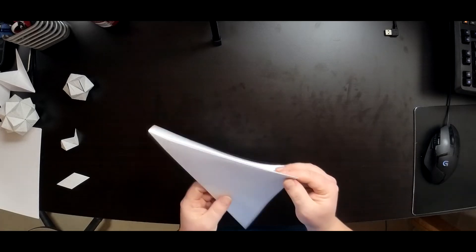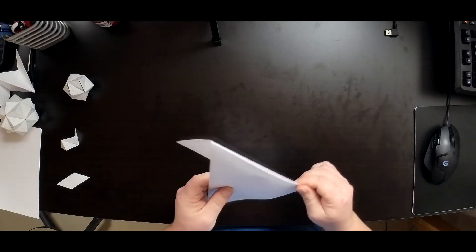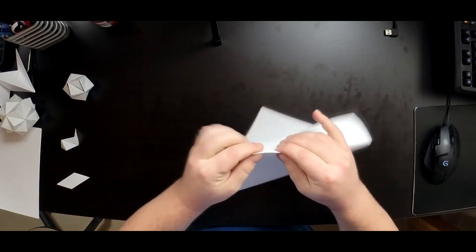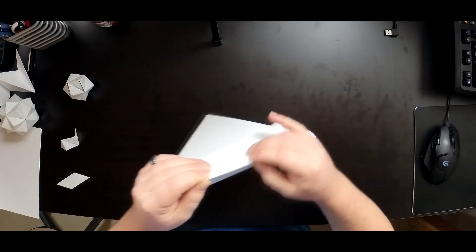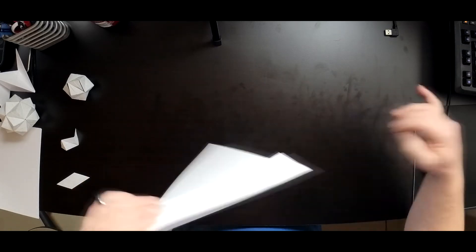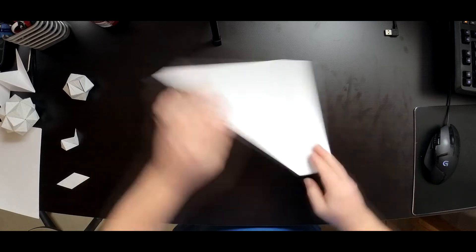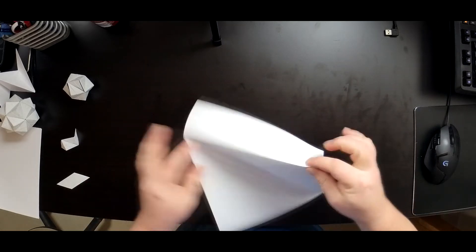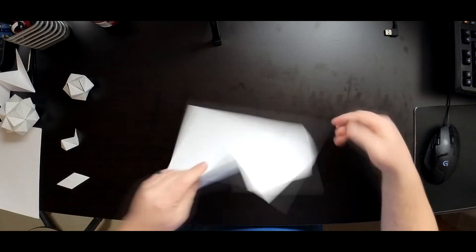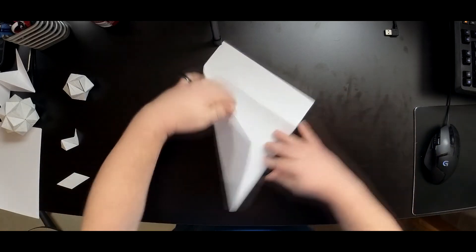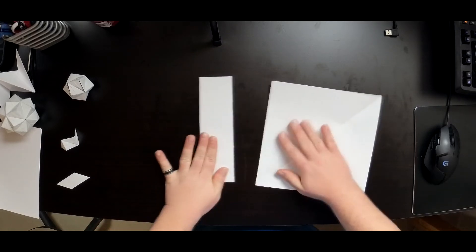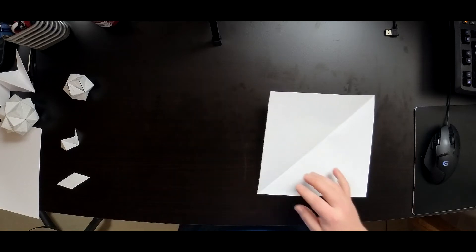Now I don't particularly like using scissors on paper like this so I fold it back and forth a couple of times. This will weaken the structure of the paper and make it so that we can tear it straight down that crease and it won't tear in a funny line or anything like that.